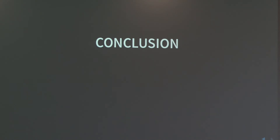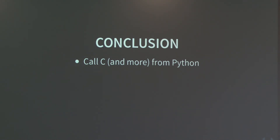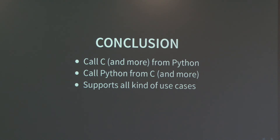So you can call C from Python, and other languages as well — I just showed you Rust. You can also call Python from C. It supports most use cases. I wrote a thing that makes PyPy and CPython talk to each other using CFFI, which is a pretty advanced use case. I haven't seen a thing you can't do in CFFI yet. Give me a shout if the thing you're trying to bind doesn't work, and I'm sure we'll be able to figure it out. You should check it out.